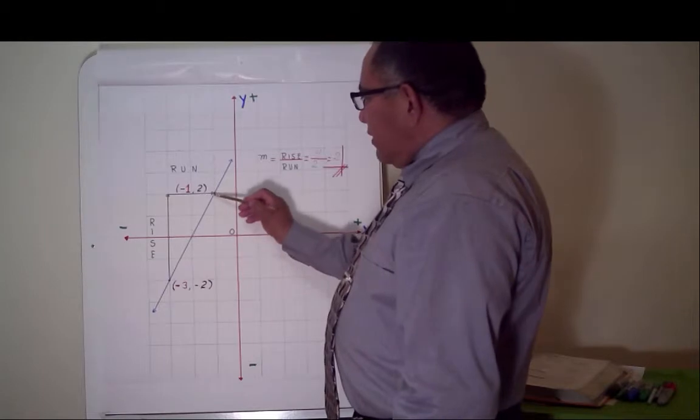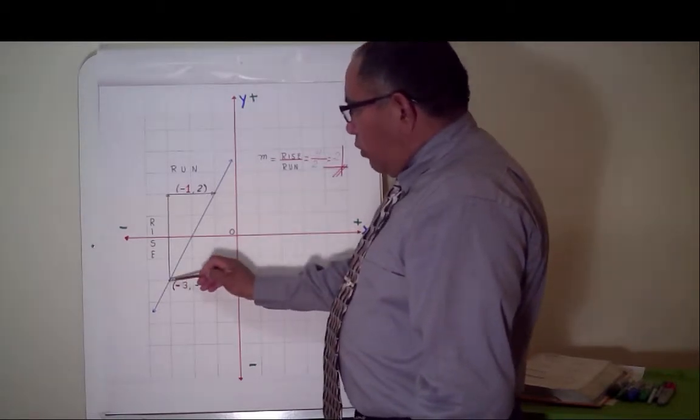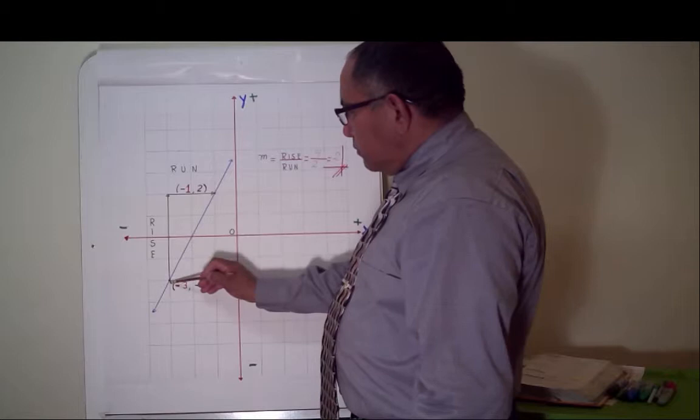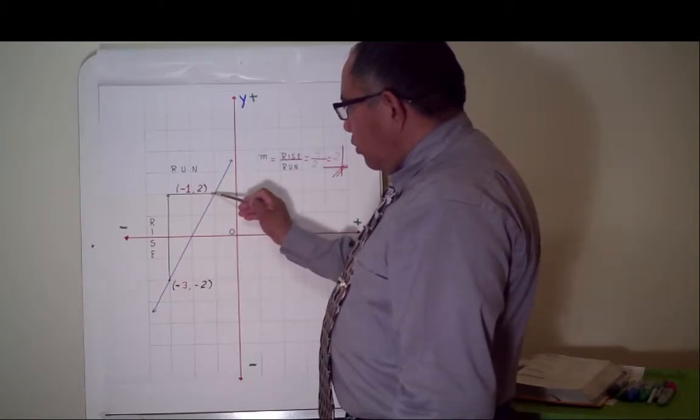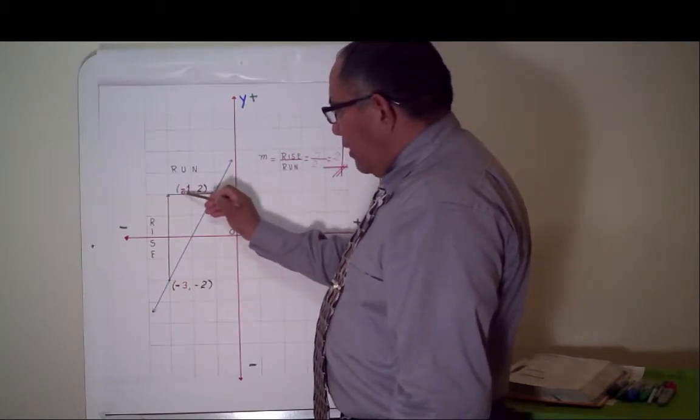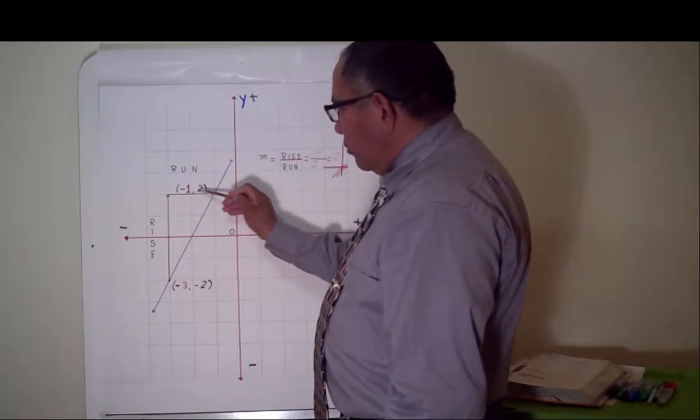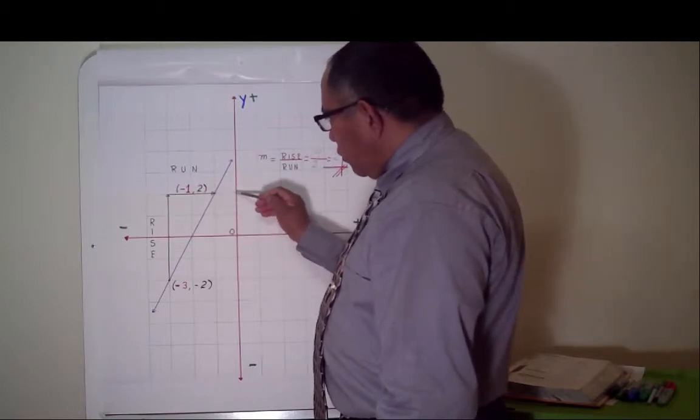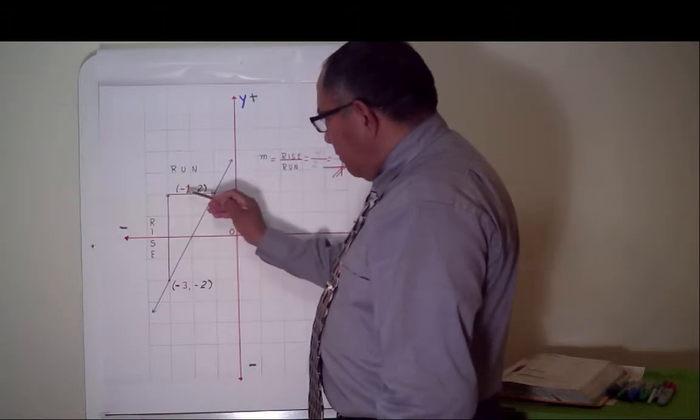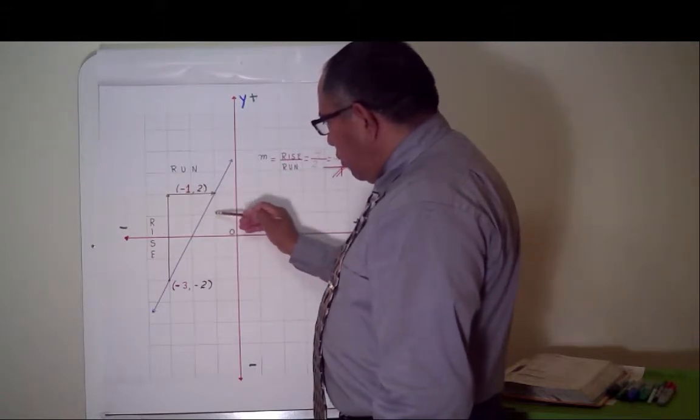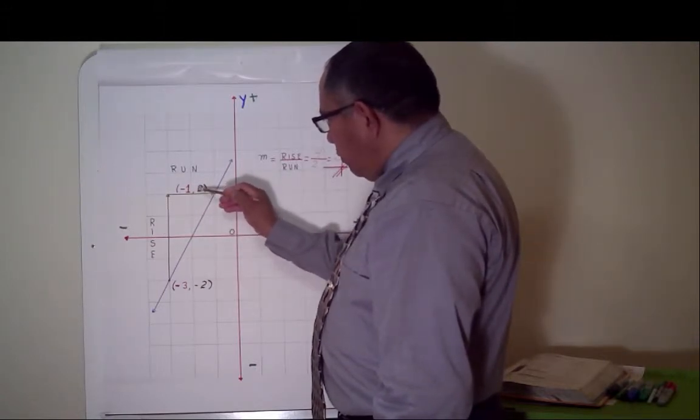First, we have to find out two intersection points. This point is minus one, comma, two. Minus one, negative, and two.